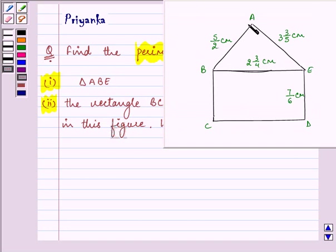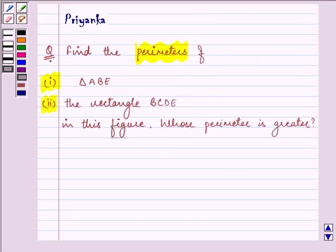Now this is the figure which is given to us in this question. Now before proceeding on with the solution we should be well versed that we can find out the perimeter of a triangle.